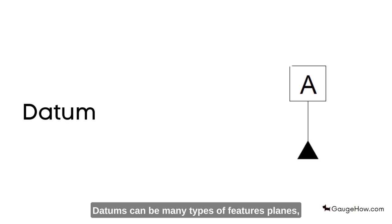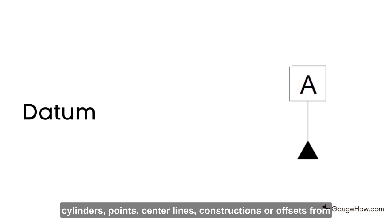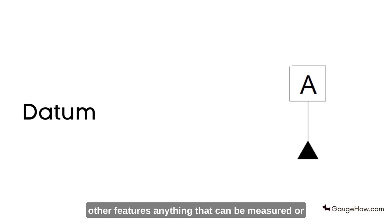Datums can be many types of features: planes, cylinders, points, centre lines, constructions, or offsets from other features.